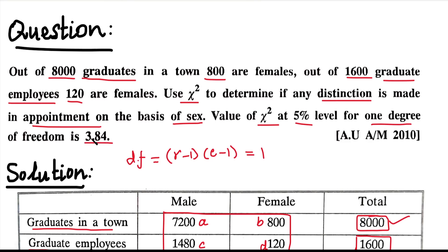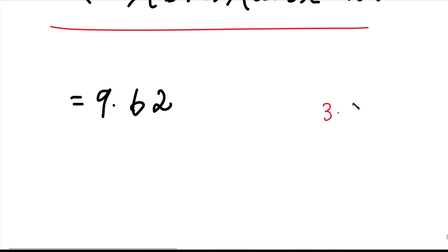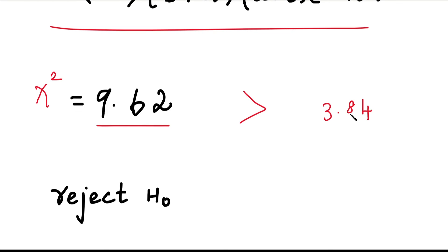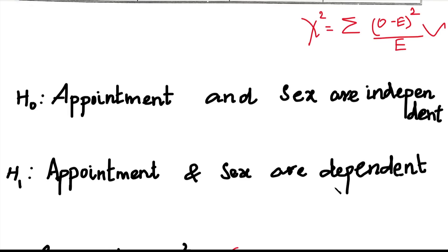Comparing the values: the calculated Chi-square value of 9.62 is greater than the table value of 3.84. Therefore we reject H0. If the calculated value were less than the table value, we would accept H0. Since the calculated value is greater, we reject H0 and accept H1: appointment and sex are dependent.